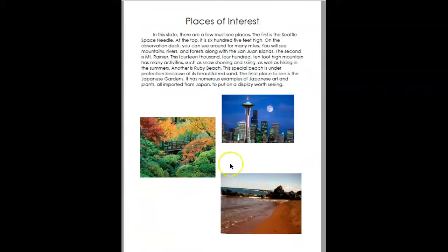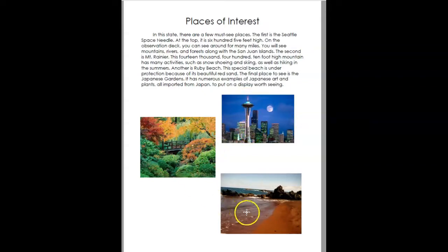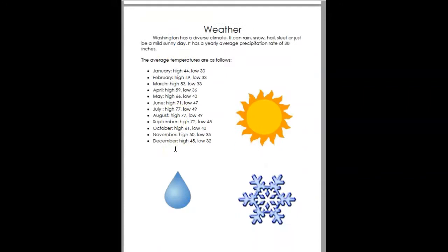There are some places of interest — I've actually been there. The Space Needle, which is a very iconic place to go to in Washington. Ruby Beach, because it has red sand, and the Japanese gardens. Here's a page with the weather — you can see they get a lot of snow. They do have some sun, but obviously Washington gets lots of rain.